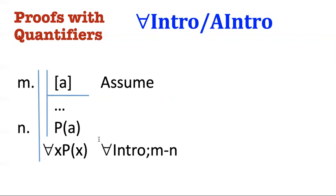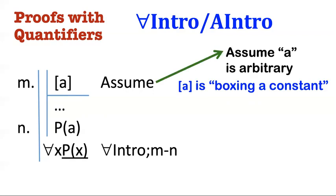We didn't assume that, for example, that a was the number two, or that a was the number seven. We just assumed that a was some object in the domain or other. And that's what this convention of putting these square braces around the name does. So when we do this, we're going to call it boxing a constant for a.